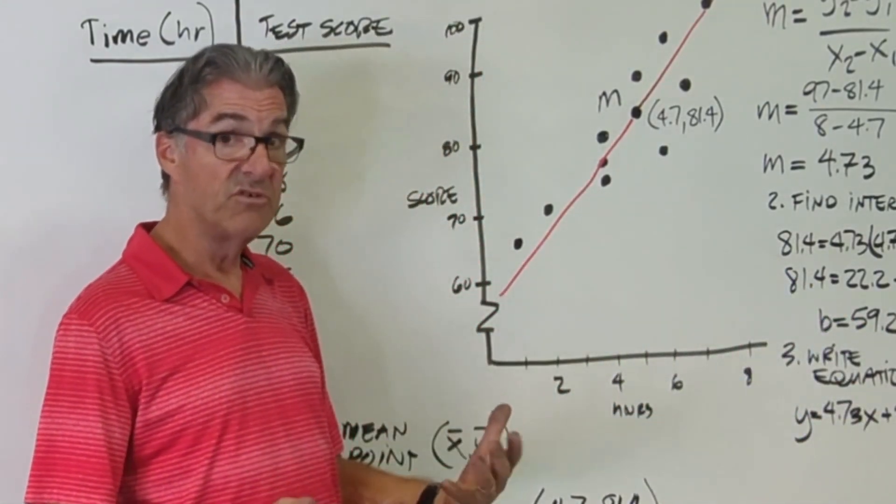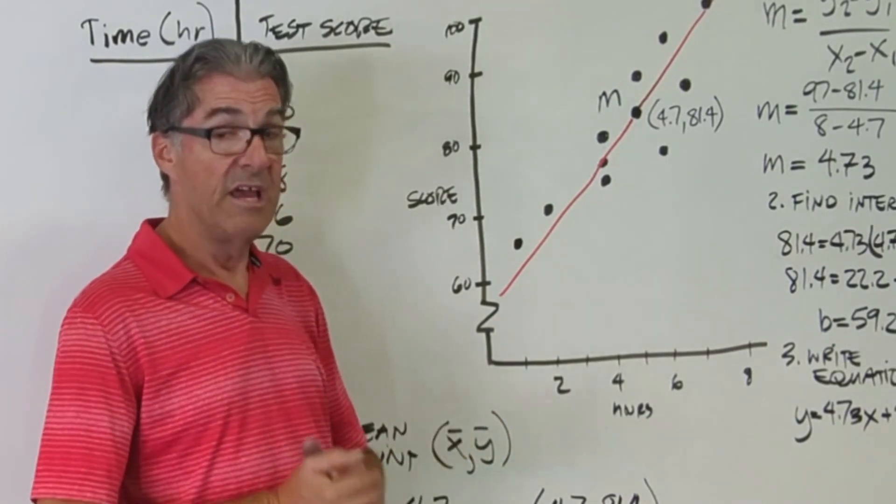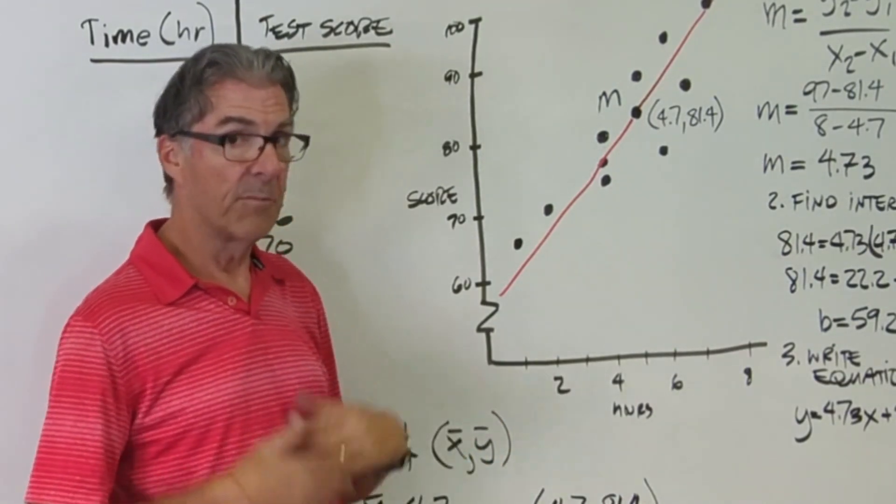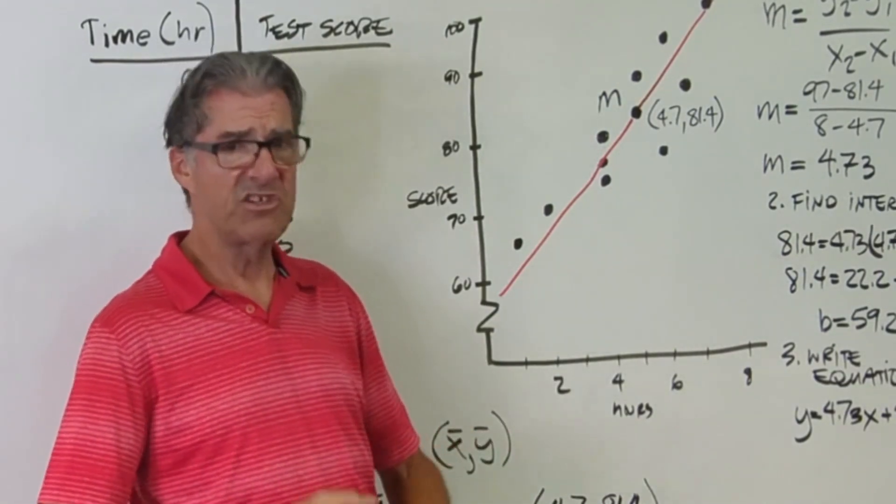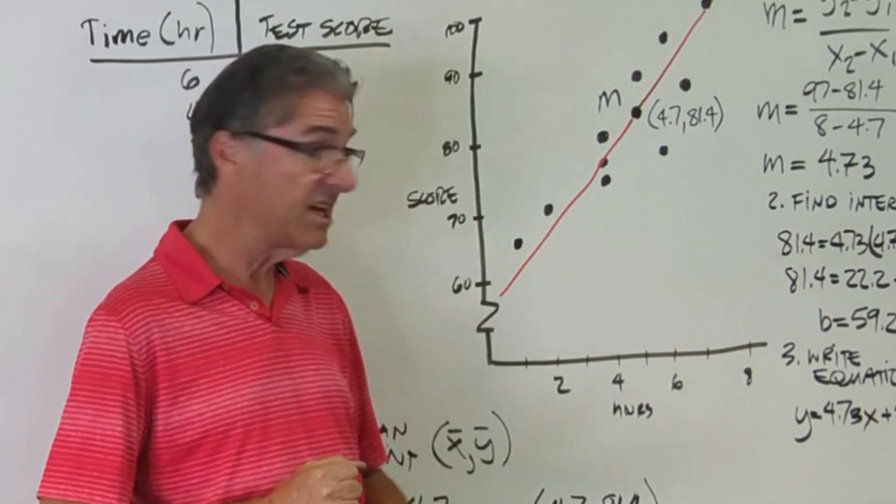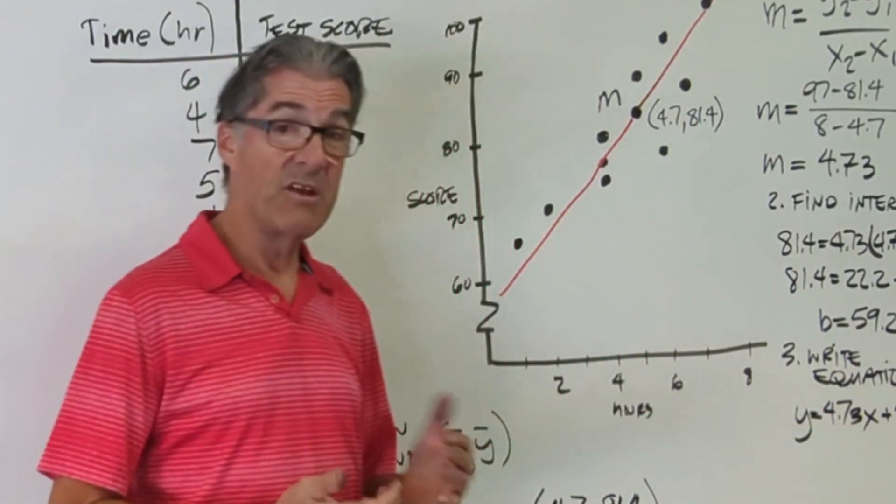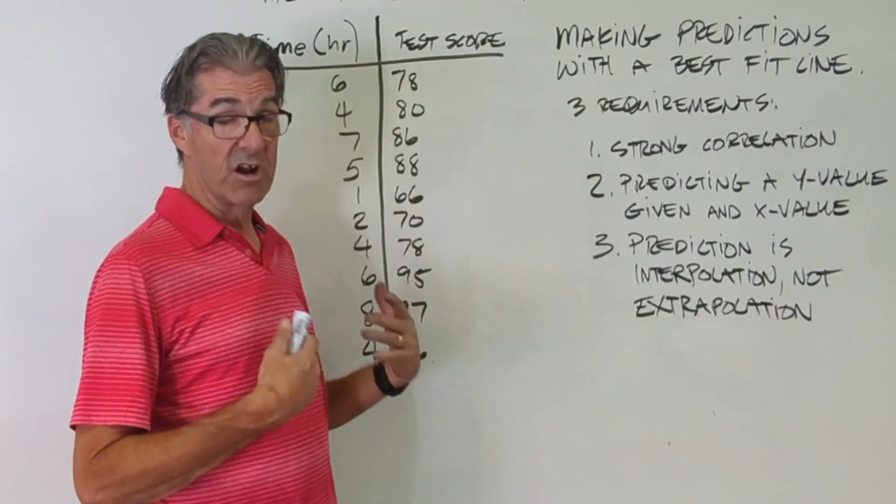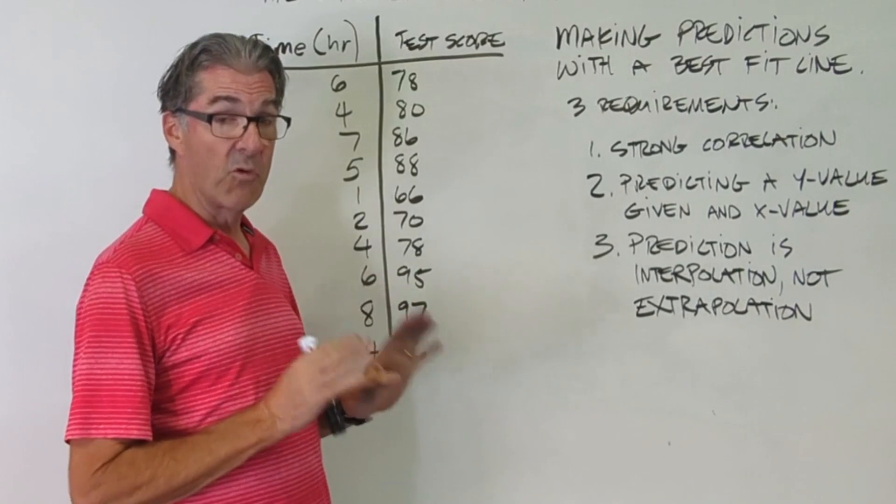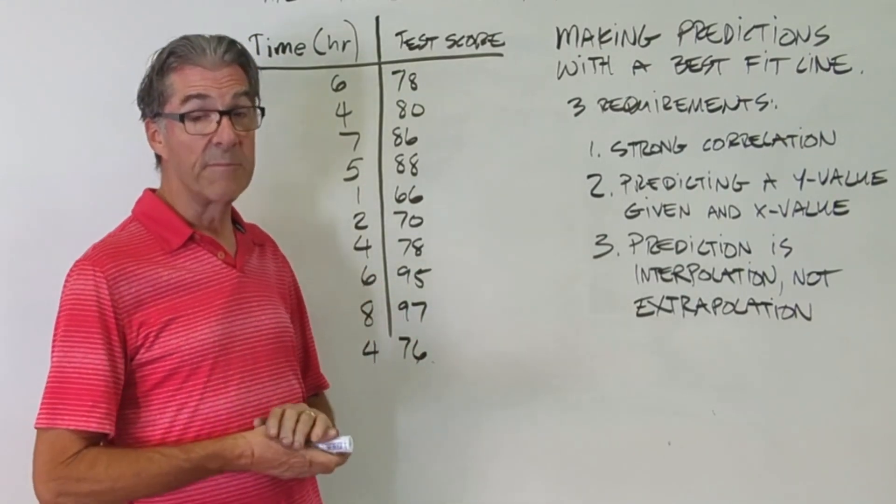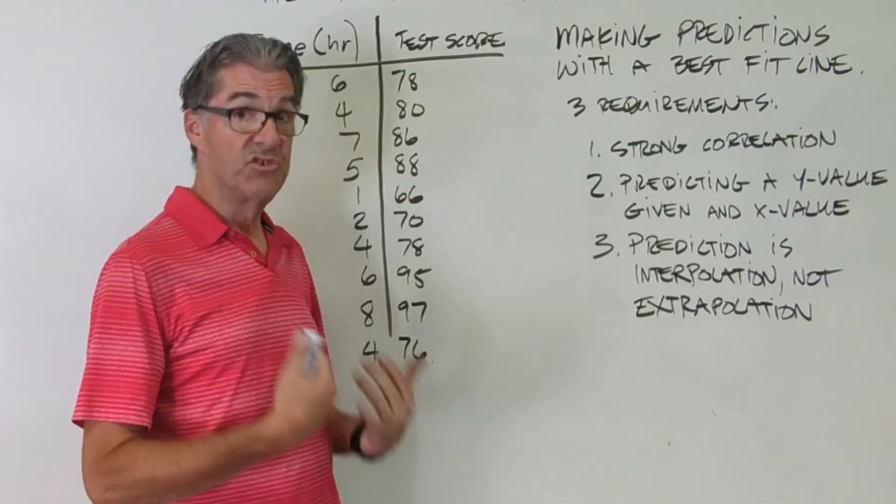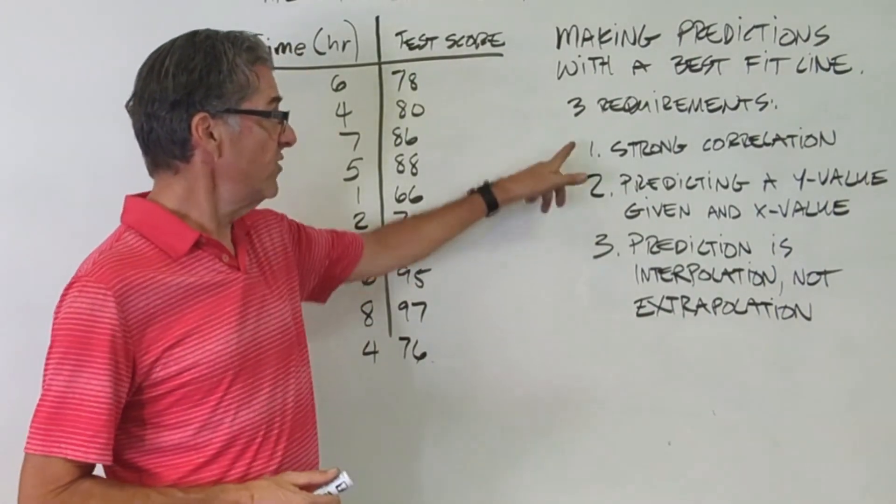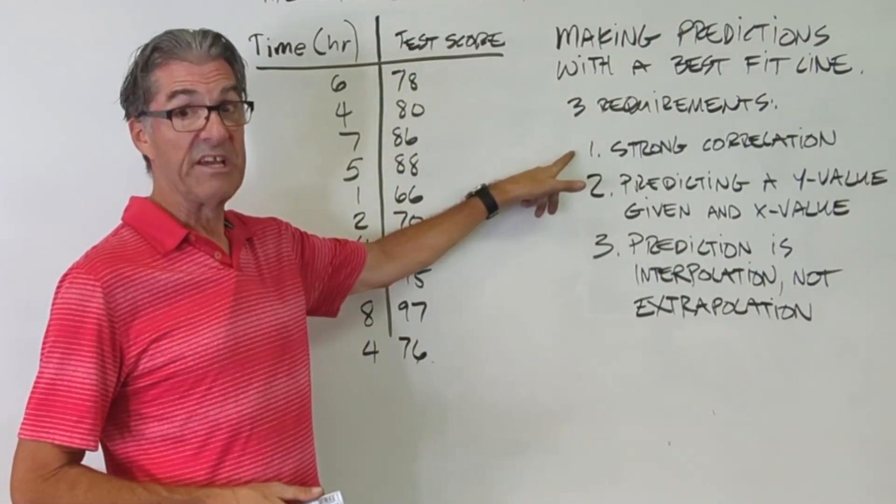Now that equation can be used to estimate the score if you know the hours. So if your pal comes up to you and says, hey, I studied for five and a half hours for that test, you can use that equation to estimate what their score would be. We're going to use our example here in our equation to make some predictions, but before we do that, we need to talk about the requirements necessary to actually do that task.